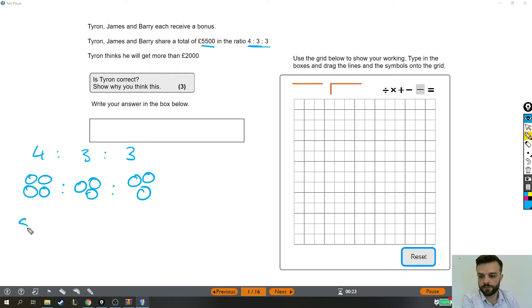The first thing we're going to do is take our £5,500 and split it into 1, 2, 3, 4, 5, 6, 7, 8, 9, 10 pieces. So the first thing is we add up the parts of the ratio to work out how many pieces we need to split our £5,500 into.